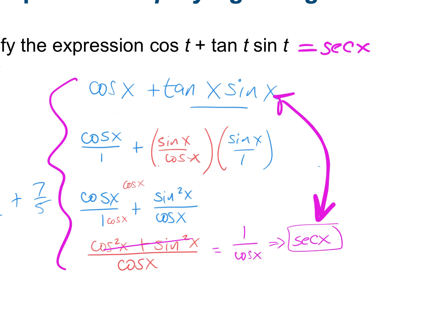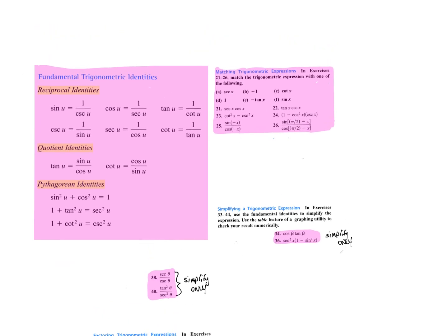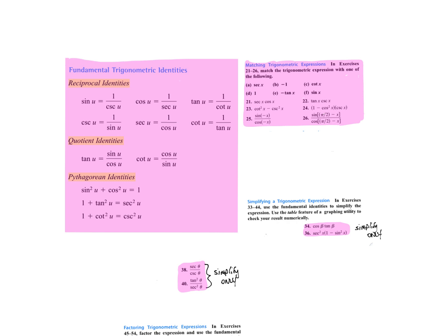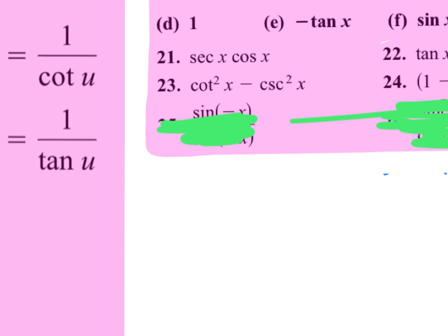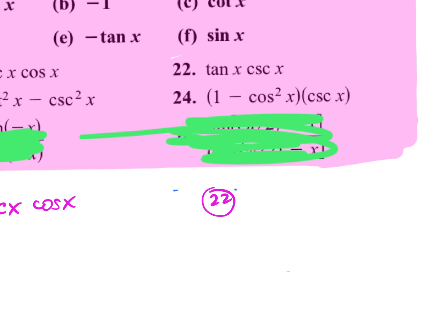Let's pull up the PDF on your homework. Go through Safari if you can't open it — some people are having internet issues. We're going to simplify problems 21, 22, 23, and 24 — go ahead and cross off 25 and 26. Problem 21 is secant x times cosine x, and problem 22 is tangent x times cosecant x.